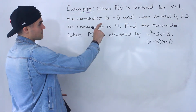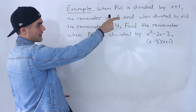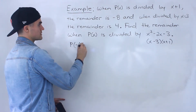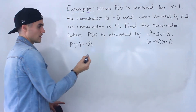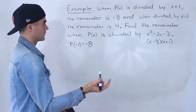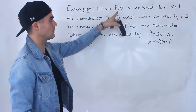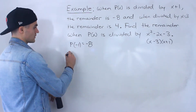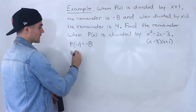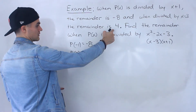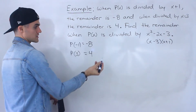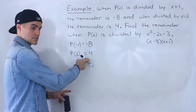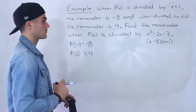Because we're taking p of x dividing by x plus one and the remainder is negative eight, we know that p of negative one is equal to negative eight by the remainder theorem. We don't know what the polynomial is, but we know at an x value of negative one it equals negative eight. Then we also know at an x value of three the polynomial is going to be four — because divided by x minus three the remainder is four, meaning p of three equals four.